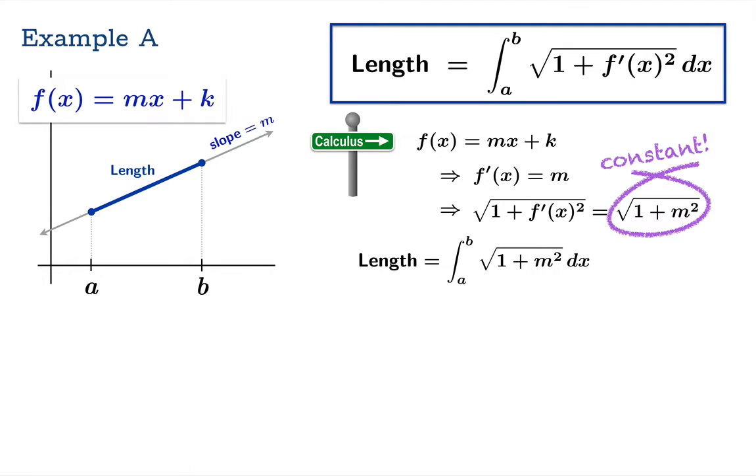The integral from a to b of this integrand function is simply square root of 1 plus m squared times the width of the interval b minus a. That should give us the arc length in question.